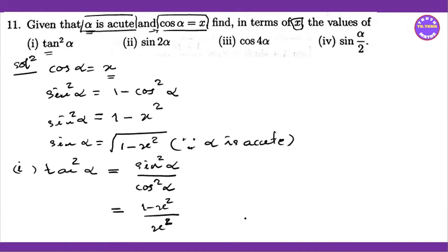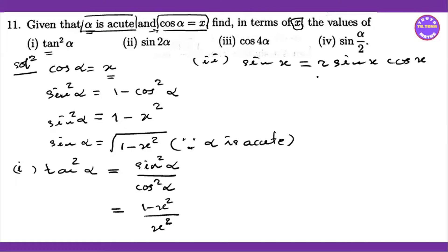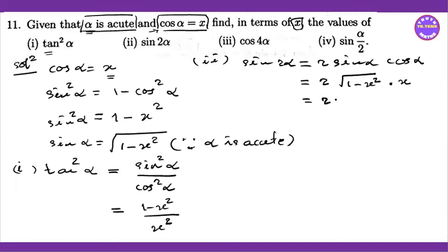Number 2: sin 2x equals 2 sin x cos x. So sin 2 alpha equals 2 sin alpha cos alpha equals 2x times square root of one minus x squared.